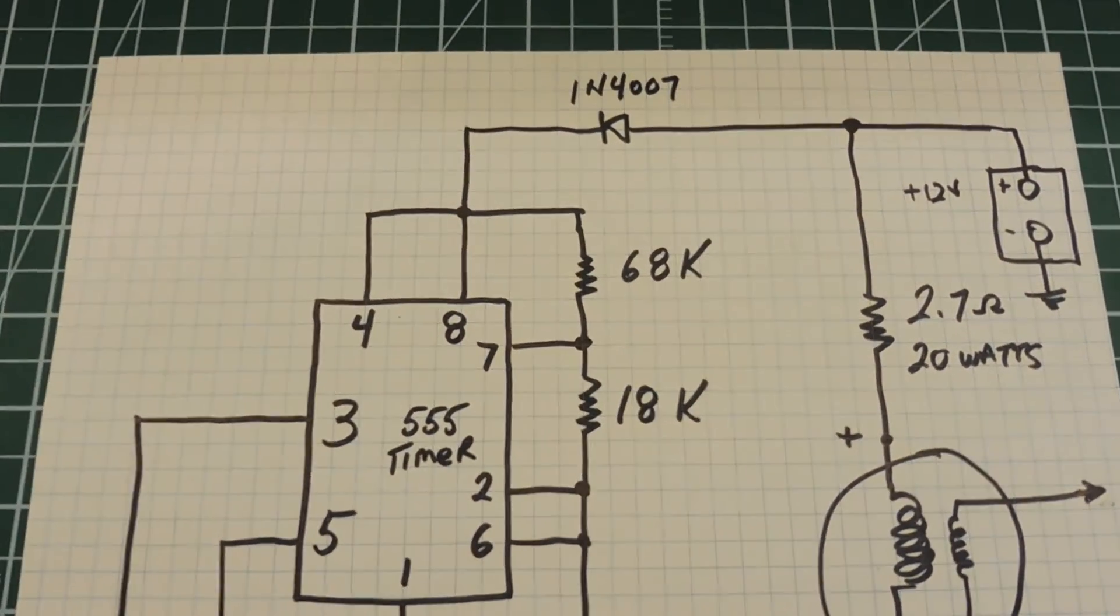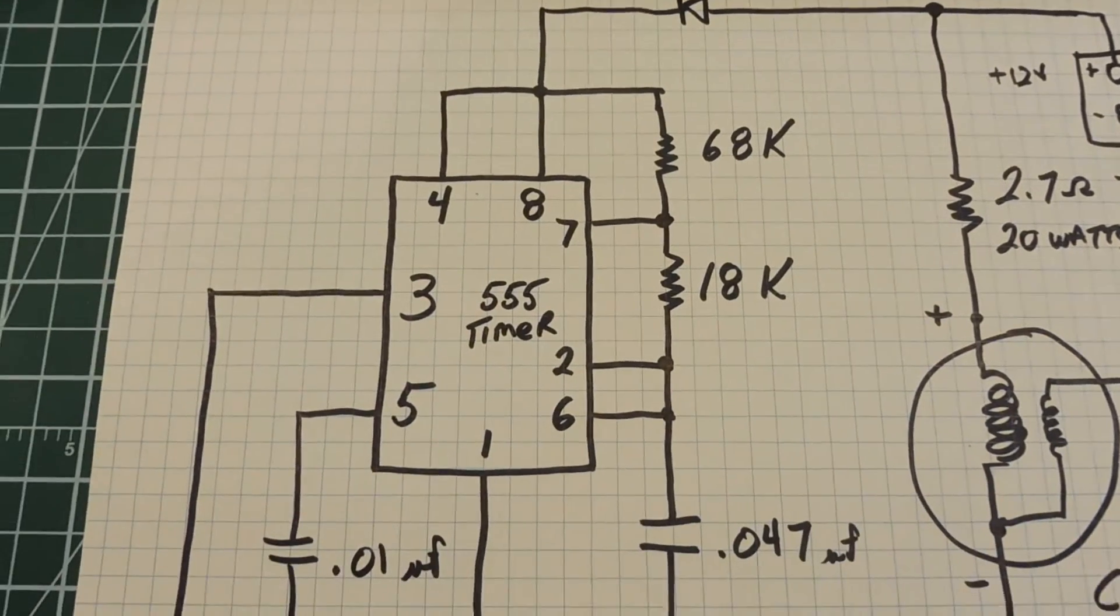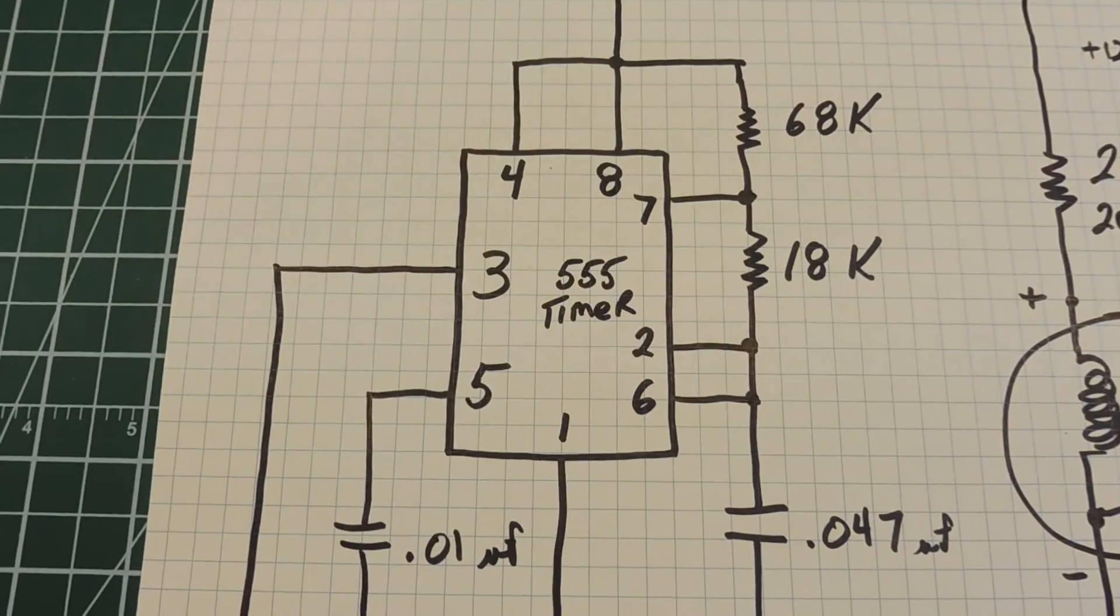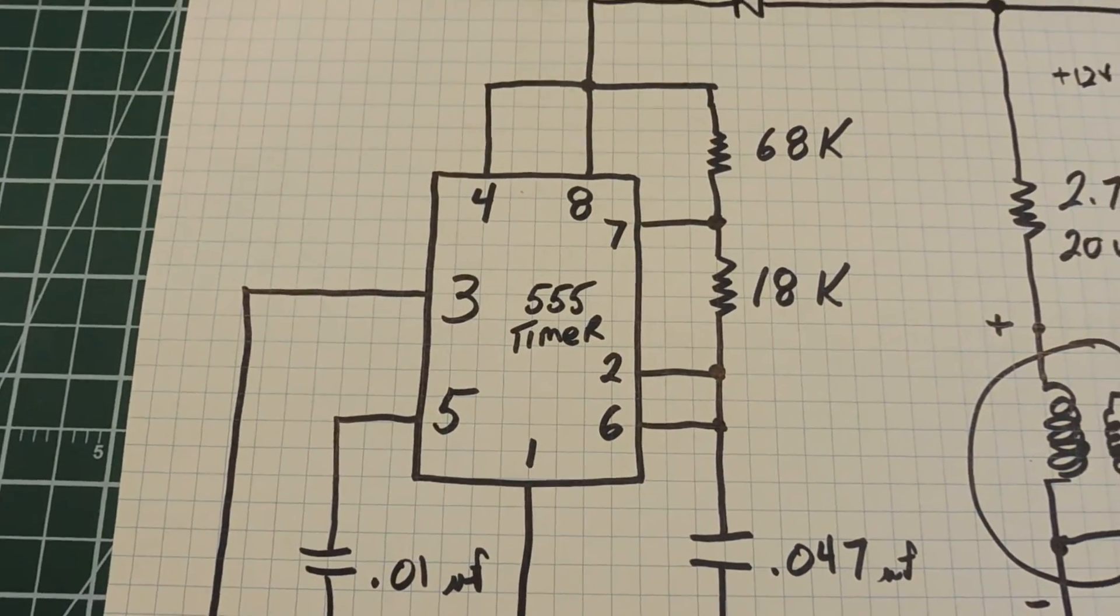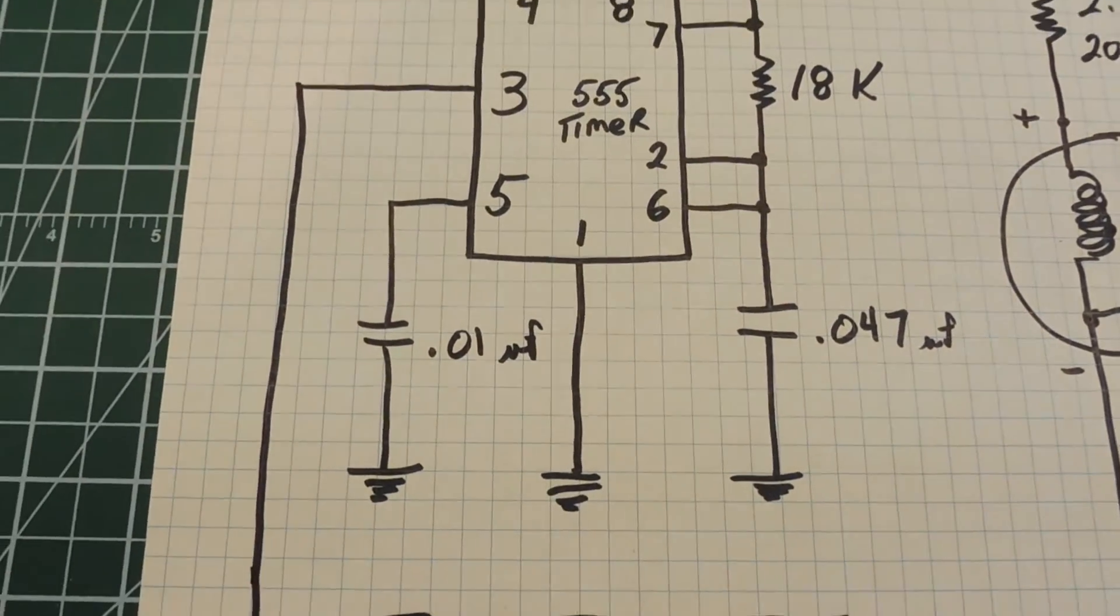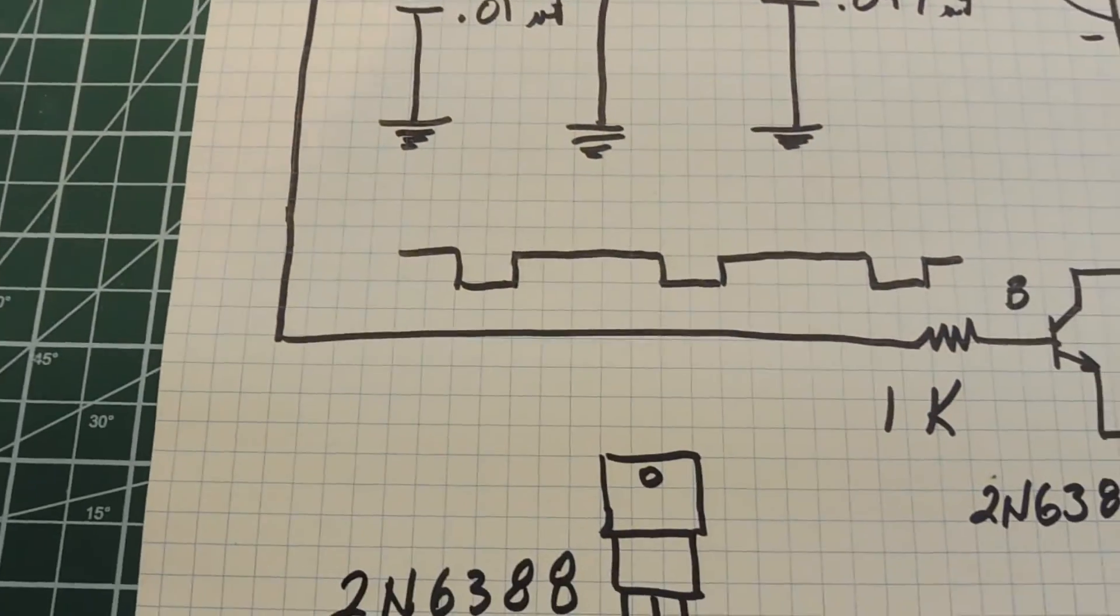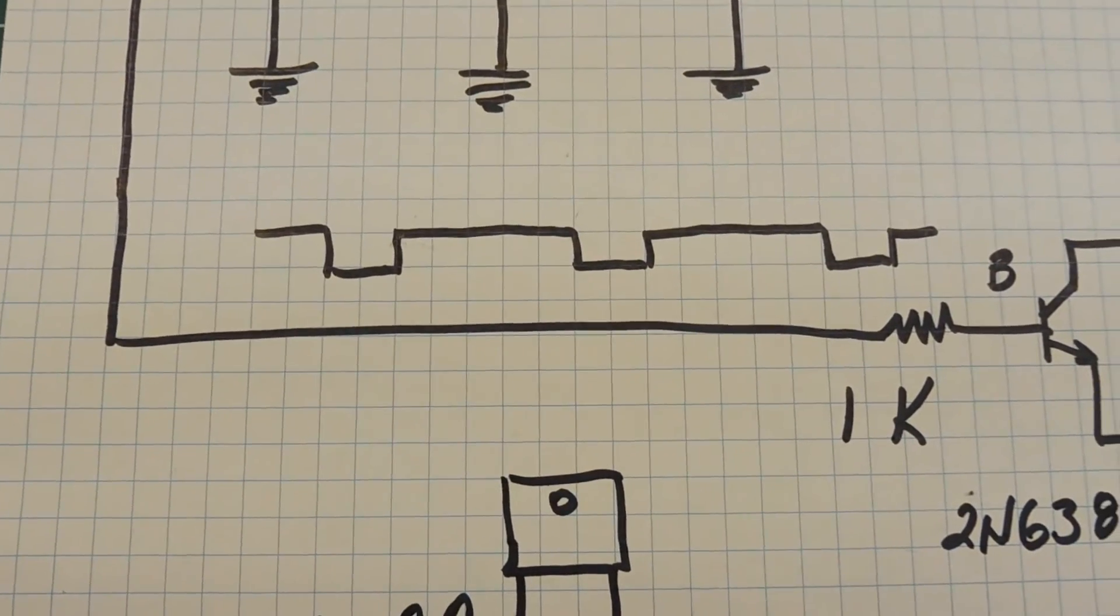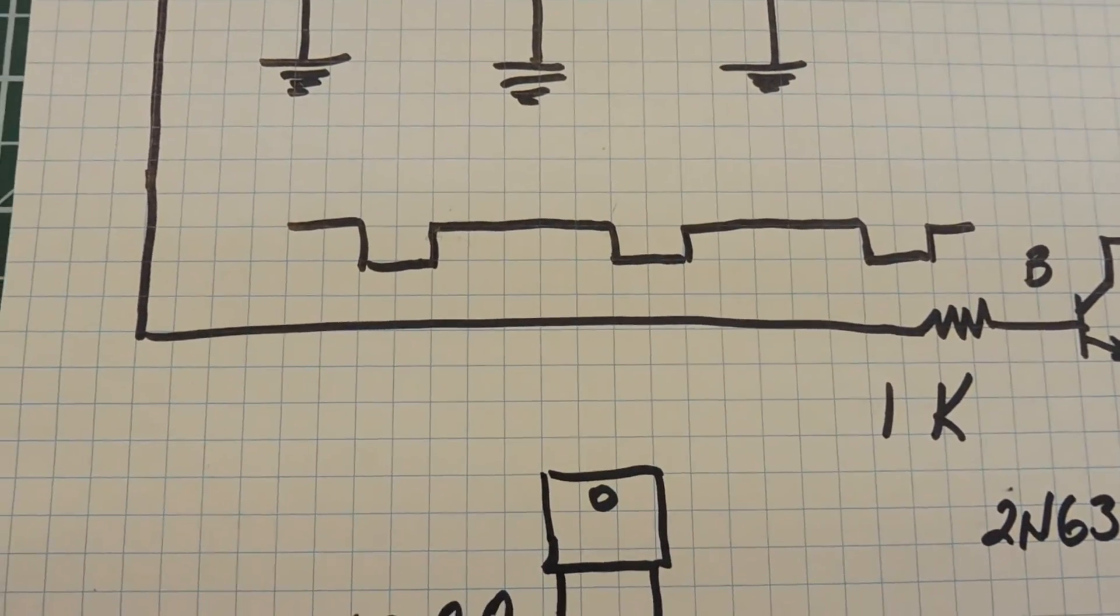Here's the schematic for the engine ignition simulator. The heart of the circuit is a 555 timer running as an astable multivibrator. With the resistor and capacitor values seen here, it will generate an output from pin 3 to a waveform similar to this, with a duty cycle and frequency calculated to fire and run an 8 cylinder engine.